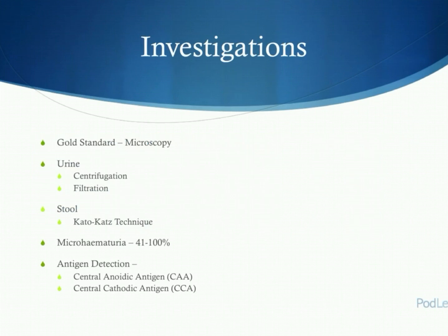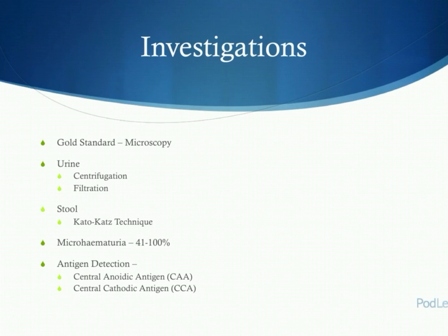Identification of disease is through light microscopy and identification of the ova. To prepare urine for this, it can either be centrifuged or filtrated through microporous paper. Stool is prepared using the Kato-Katz technique, where stool is spread over a slide and stained with methylene blue to make the eggs more visible. For urinary schistosomiasis, microhaematuria can also be detected using urine dipsticks, although it has quite a wide range — 41% to 100% can show signs of blood in the urine. More recently, urinary dipsticks have been used to look for specific antigens such as circulating anodic and cathodic antigen, and this may become more routine practice in the future.